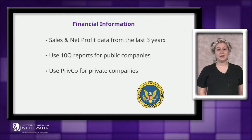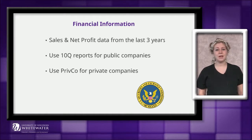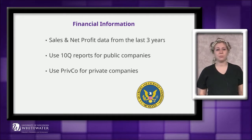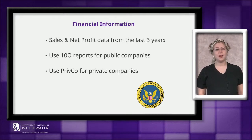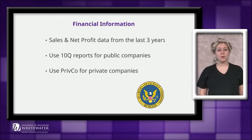I'll illustrate how to find these in just a moment. For private companies, you probably won't find an investor relations page because these companies don't have investors. You may be able to find some financial data on the website, but probably not very much. Your best option for finding this information is to use a database called PrivCo, which includes company information and financial statements for many private companies. I'll demonstrate this database in just a moment. If you can't find the information you need on PrivCo, try searching for newspaper articles that discuss the company's financial health. Are profits increasing? Are they opening or closing stores? At the end of this video, I'll give you a list of databases you can use to search for newspaper articles.